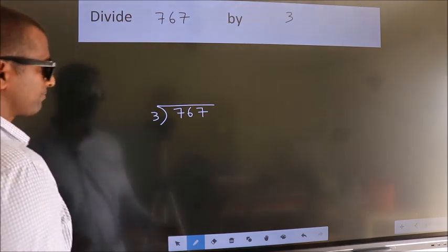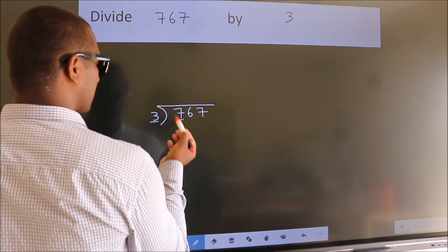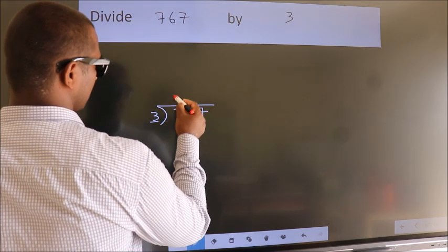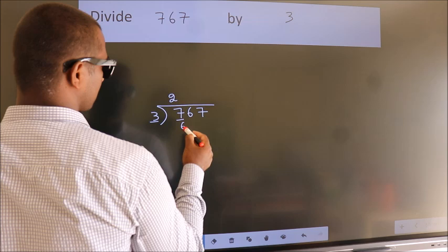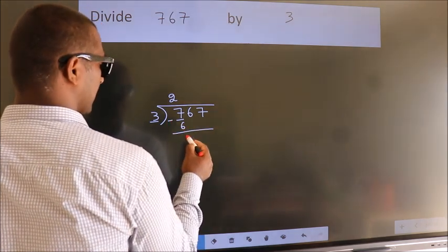Next, here we have 7, here 3. A number close to 7 in the 3 table is 3 twos, 6. Now we should subtract. We get 1.